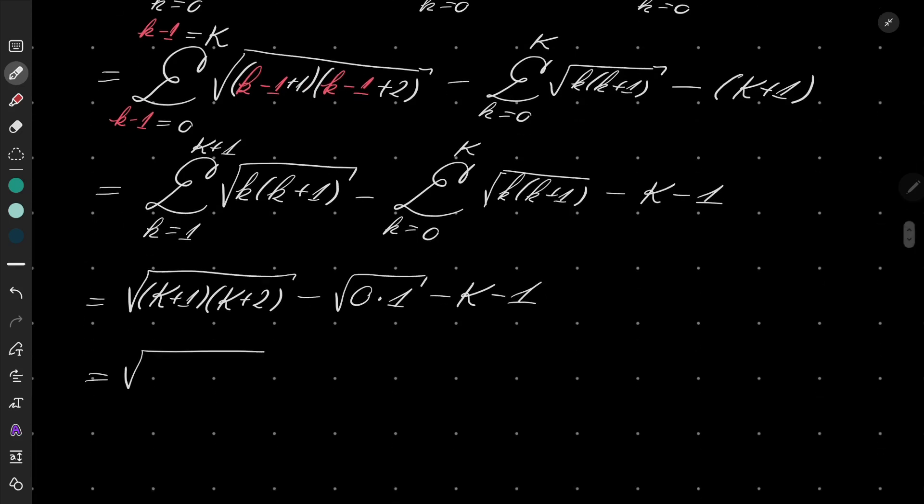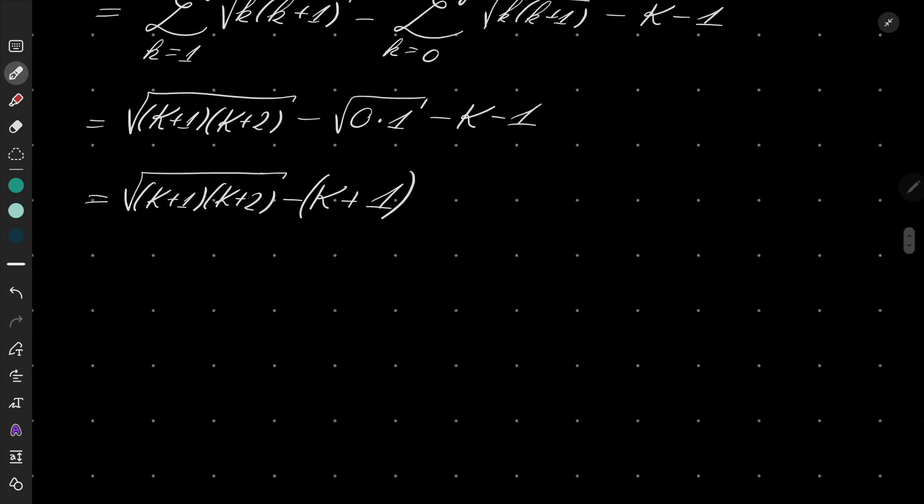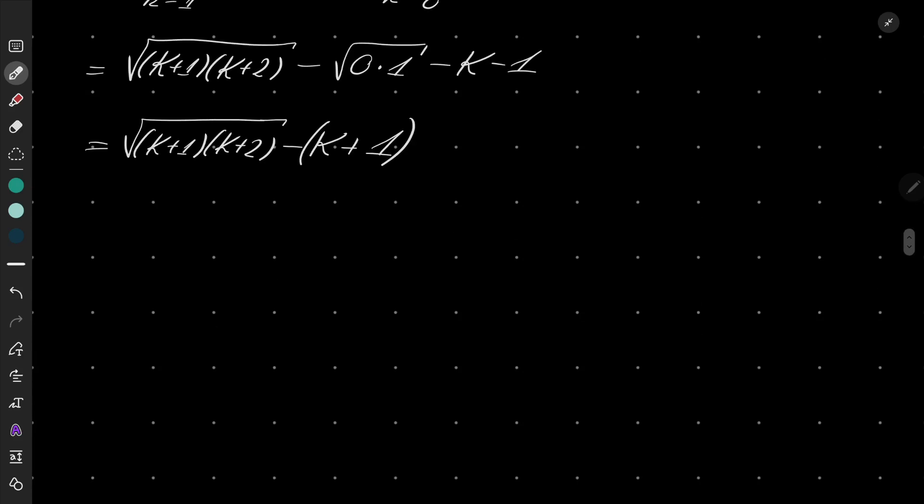And we have capital K plus 1, capital K plus 2, minus k minus 1. So now what I want to do is find the limit as capital K goes to infinity of this expression. Because remember that my infinite sum is just a limit of partial sums.